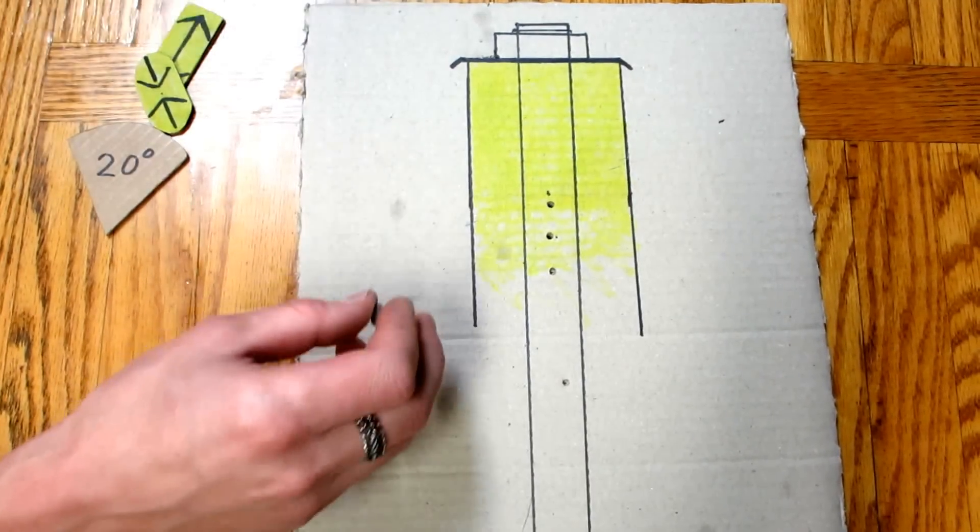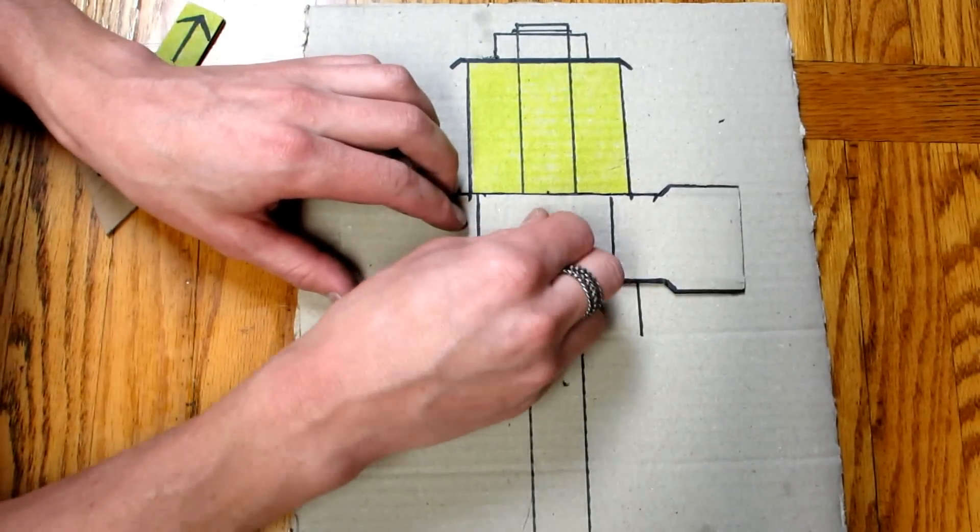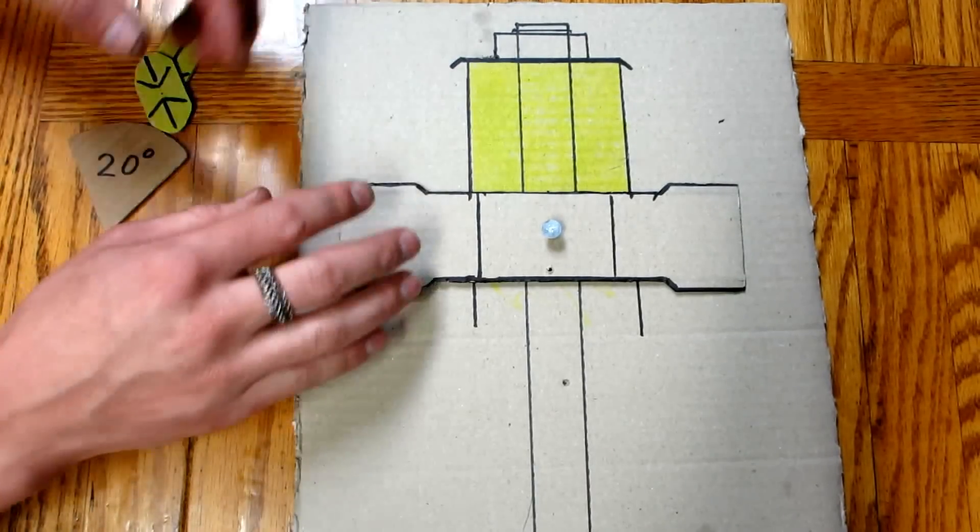So, what happens if you make a thicker bushing seat, like this one right here, is something quite interesting.